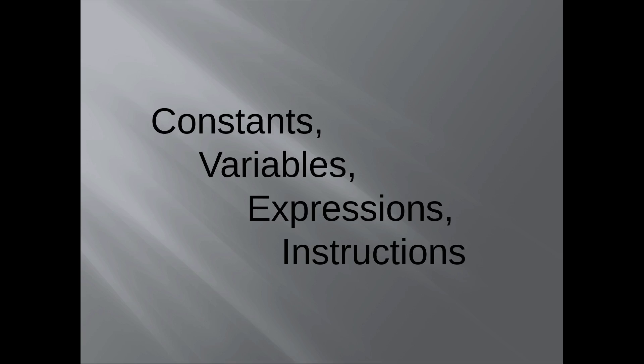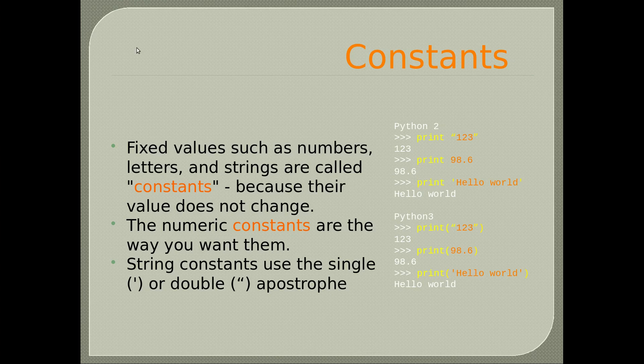In this video, we will discuss constants, variables, expressions, and instructions. Number 1: Constants. Fixed values such as numbers, letters, and strings are called constants because their value does not change. Constants that contain numeric values can be written in any way, while string constants use the single or double apostrophe.